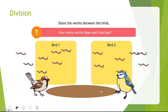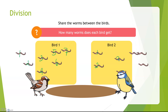Let's count how many worms does each bird get. One, two, three, four, five, six, seven. One, two, three, four, five, six, seven worms. Each bird got seven worms.